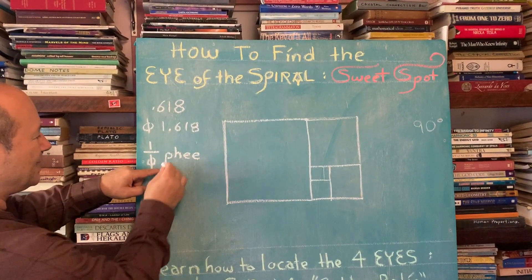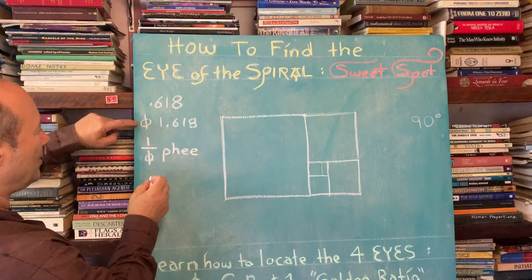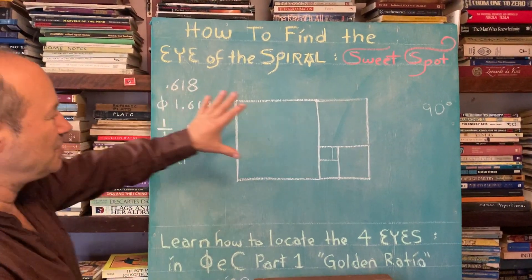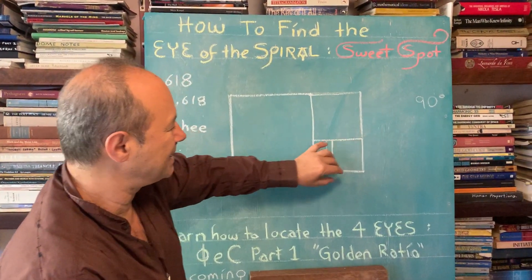P-H-double-E. And it's a small p, whereas the phi has a big capital P, phi. So we're reducing each square by 0.618.